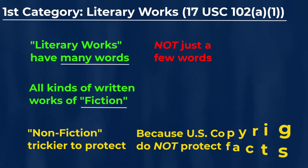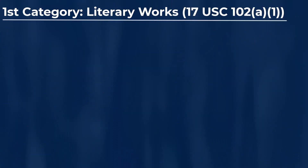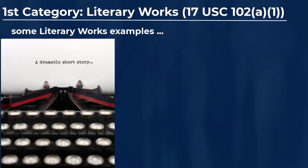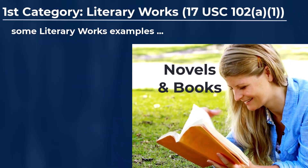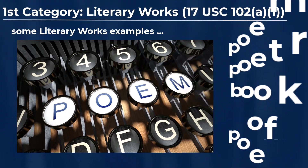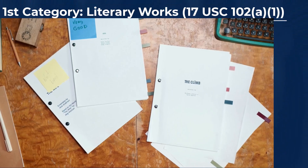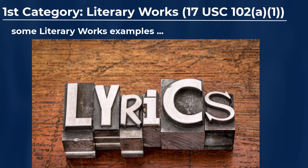Examples of literary works that may be protected by U.S. copyrights can include all kinds of written works of fiction, and sometimes aspects of written nonfiction. However, nonfiction can be a little bit trickier to protect because U.S. copyright law generally does not protect facts, and nonfiction is largely comprised of facts. Some examples include short stories, novels, books in general — particularly fiction books — as well as poems and books of poetry. This first category of literary works can also include things like scripts, screenplays, and written music such as lyrics.